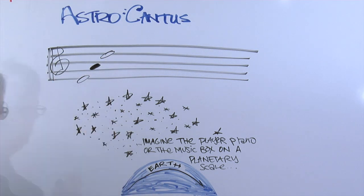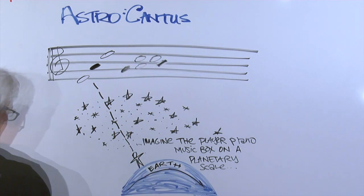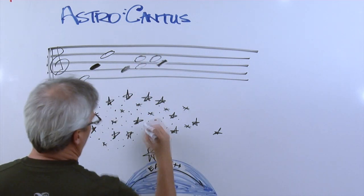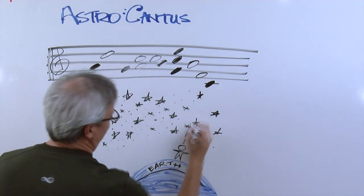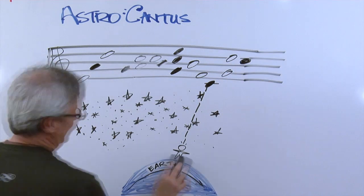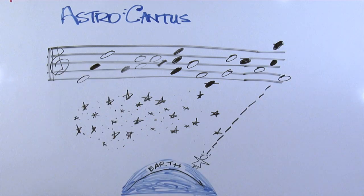As earth turns, every object in the universe crosses the meridian. When Astrocantus assigns a musical note to each of those objects, then the earth acts like an instrument playing the universe.